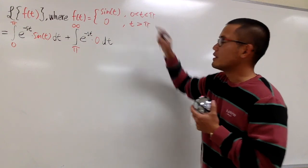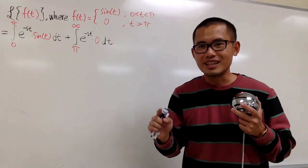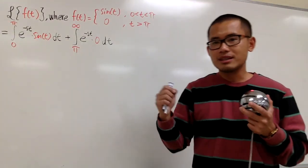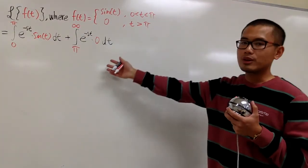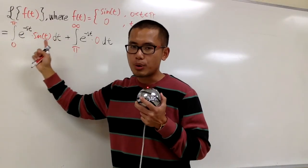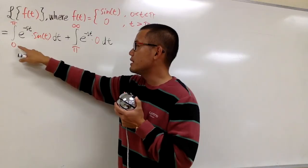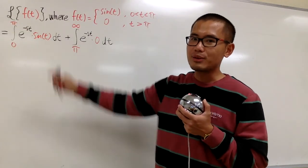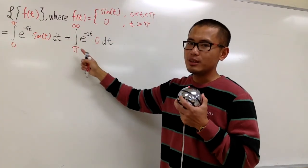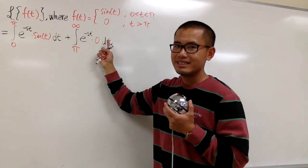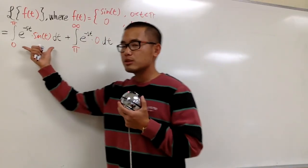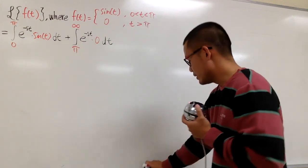Notice that here they didn't have any equal sign, but it's okay, because this function is piecewise continuous and it's going to work out nicely. Also notice that the first integral is not an improper integral at all, because the limit is just going from 0 to π, so we can totally get the answer for that. The second integral is the improper integral part, but it's super easy because it's just 0 anyway.